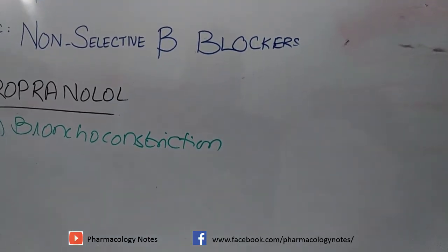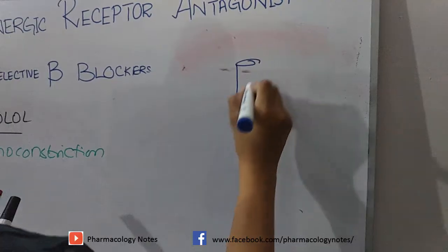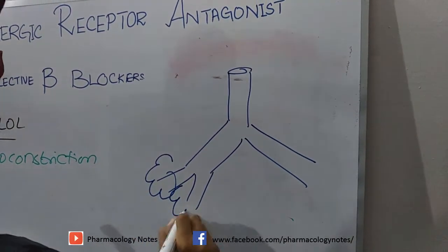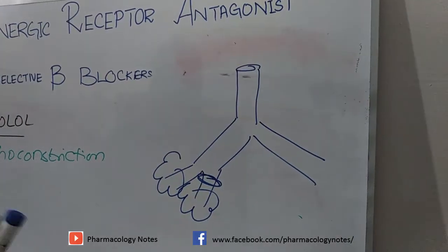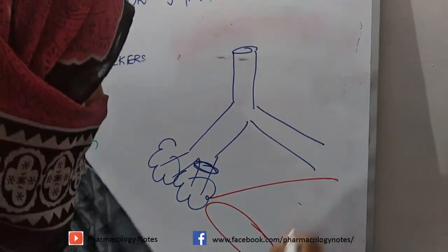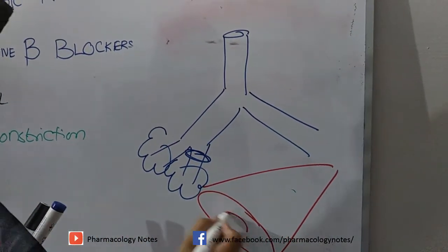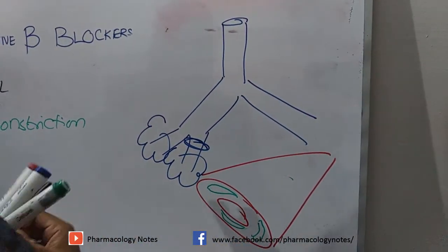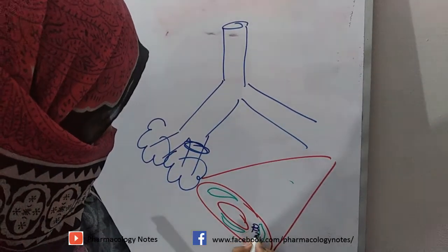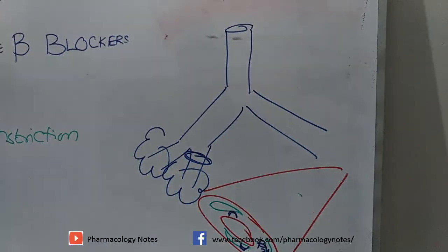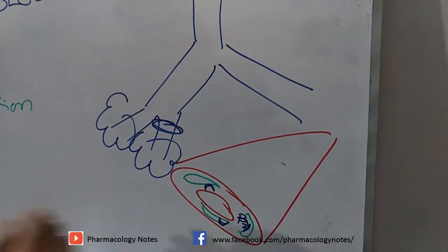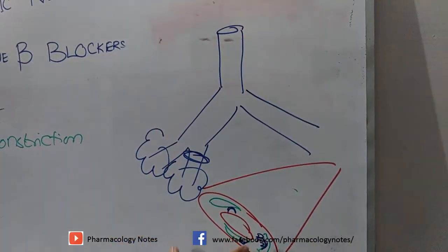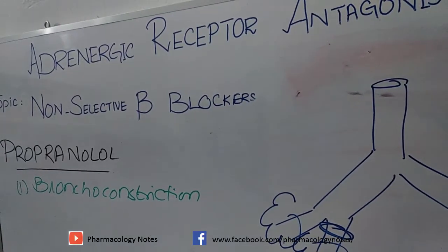Bronchoconstriction occurs as follows: in the bronchioles, there are smooth muscles surrounding the airway. Beta-2 receptors are present on these smooth muscles. When propranolol is administered, it acts on beta-2 receptors and causes contraction of smooth muscles, resulting in vasoconstriction within the bronchial system — and thus bronchoconstriction.